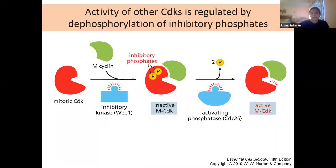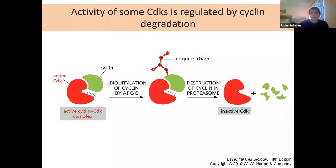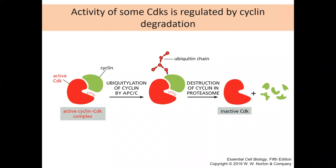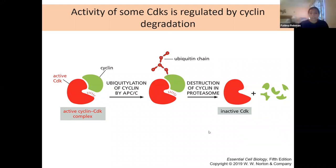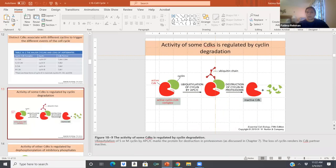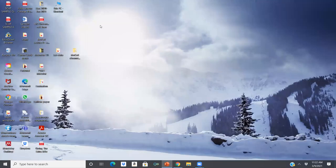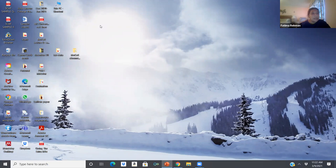Regarding cyclin A specifically: when it's free it's found in the cytoplasm, but when bound to CDK it translocates into the nucleus where replication happens. We can observe this in tissues by looking at its localization — if it's translocated to the nucleus, it indicates the active cyclin A-CDK complex, showing the cell is actually replicating DNA.